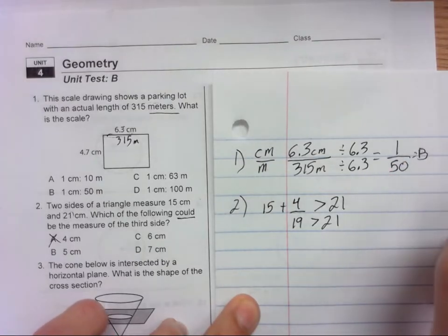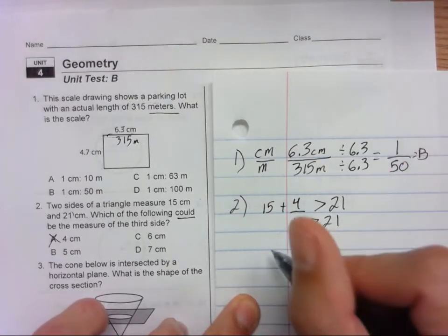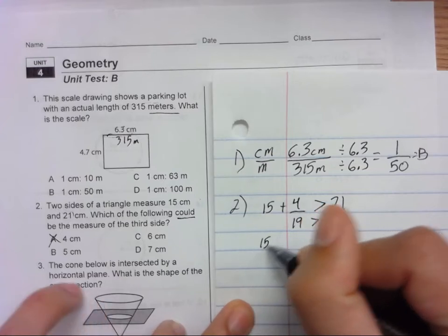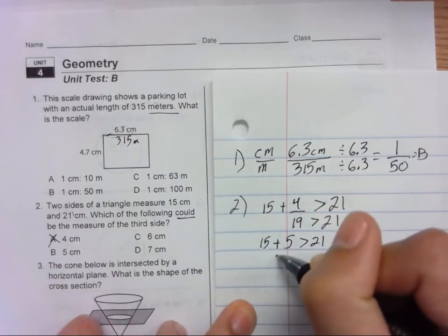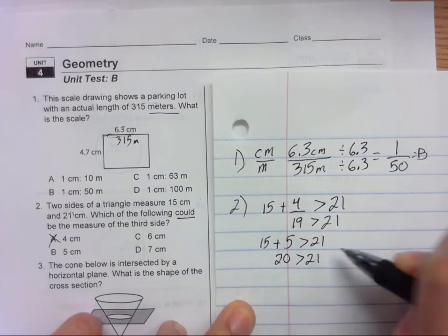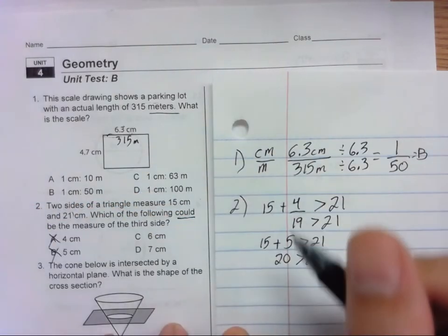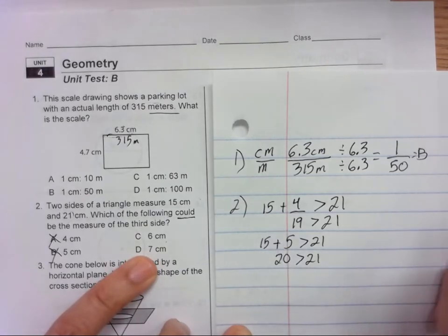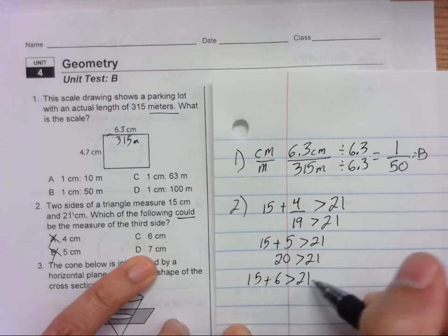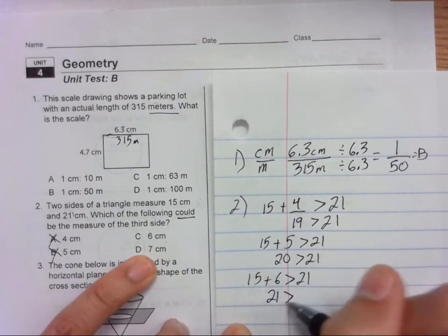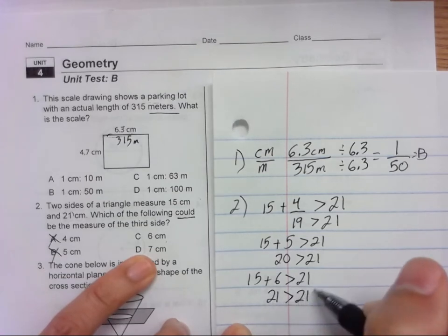Let's look at the next one. Instead of 4, it would be 15 plus 5 has to be greater than 21. That is 20, which is not greater, so that can't be the answer. For 6, well 15 plus 6 would have to be greater than 21, and that is 21. 21 is not greater than 21.